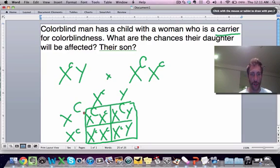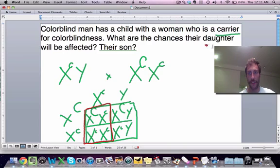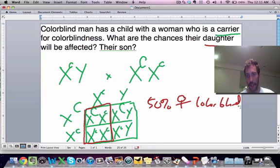Okay, so our girls over here on the left half of this Punnett square, of the daughters, so what are the chances their daughter will be affected? So we're asking just specifically for the daughters. So of these daughters, the chances are 50%. Okay, 50% of daughters will be affected with colorblindness. And the other 50% are going to be carriers.